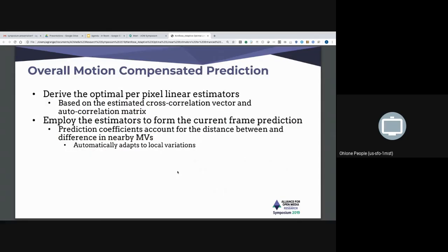So overall, the system is we derive a per pixel optimal linear estimator, it's different for different pixels, based on the estimated cross correlation vector and autocorrelation matrix. We employ the estimators to form a current frame prediction, and the prediction coefficients account for both the distance between and the difference in nearby motion vectors, and it automatically adapts to local variations.